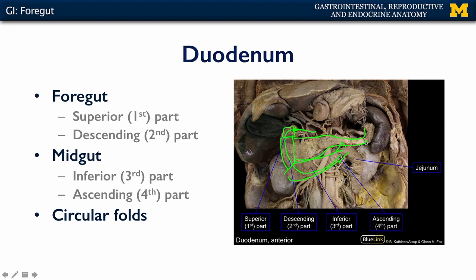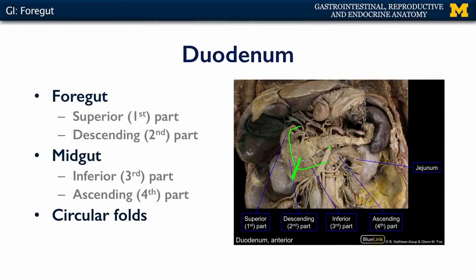The duodenum is significant because it's the border between the foregut and the midgut — between the second and third parts, we have a separation of the gastrointestinal tract. Anything proximal is the foregut; anything distal will be the midgut. The foregut is served by the celiac trunk, and the midgut is served by the superior mesenteric artery, which we can see located right here. This region of the duodenum and the head of the pancreas is significant because there are significant anastomoses between branches of the celiac trunk and the SMA, so both arteries serve this particular location with blood.